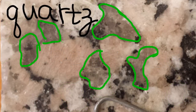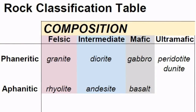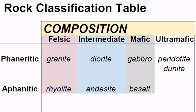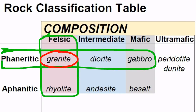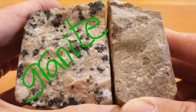Quartz appears gray and somewhat translucent. In the igneous rock classification table, only the felsic column is applicable to this sample, and because the crystals are large enough to be seen with the naked eye, the rock is phaneritic in texture. Therefore, the texture and composition we observed requires us to recognize this rock as granite. Granite is a felsic, phaneritic igneous rock.